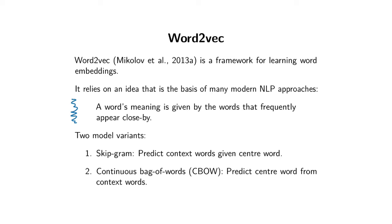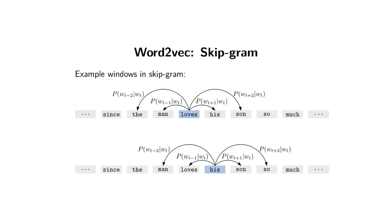We're going to look at two variants of Word2Vec. One is called skipgram and the other is the continuous bag of words approach. In skipgram, we're going to try and predict context words that occur around a particular center word. So if I've got a center word like 'loves,' I want to try and predict the probability of the words that precede it and the words that follow it.